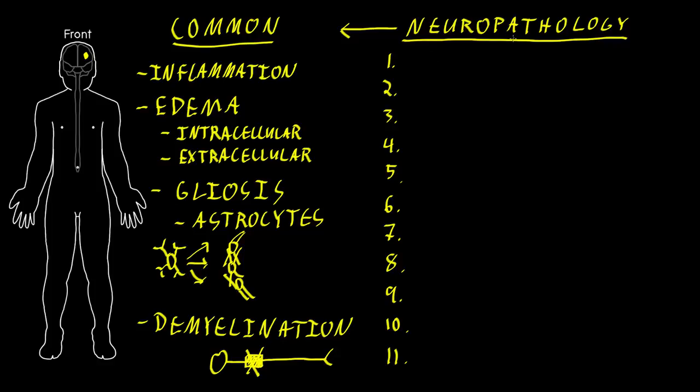I'll mention briefly—more later—that some types of neuropathology affect the nervous system just when it's developing, which we call neurodevelopmental disorders. Or some just affect the nervous system after development is finished. While some can affect the nervous system either while it's developing or later after it's finished developing.